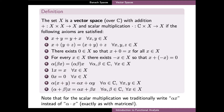Moreover, the vector space needs to contain a zero element, which is precisely the so-called neutral element of the addition, meaning that if we add the zero element to a vector x, then this doesn't change the vector. And in addition, every element should have an inverse element with respect to the addition, meaning that if we add the vector and its inverse element together, we get the zero element.